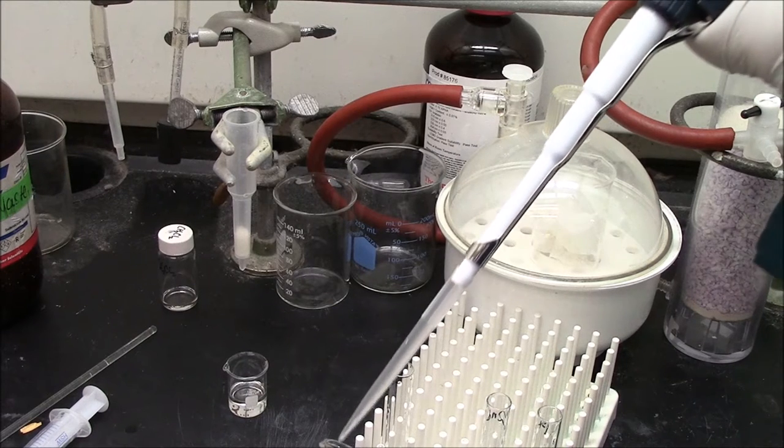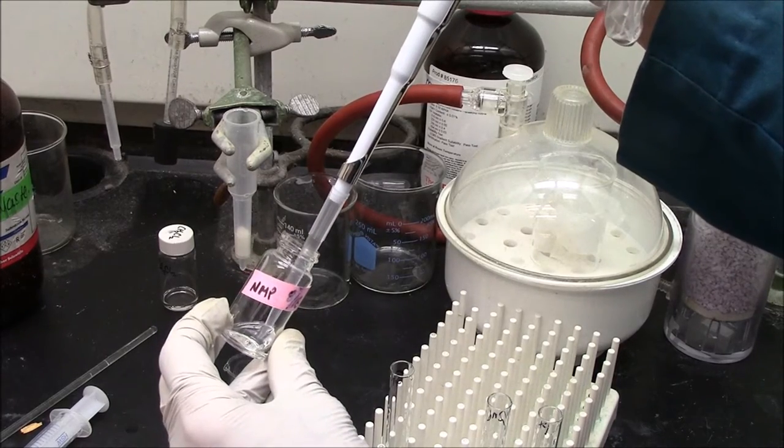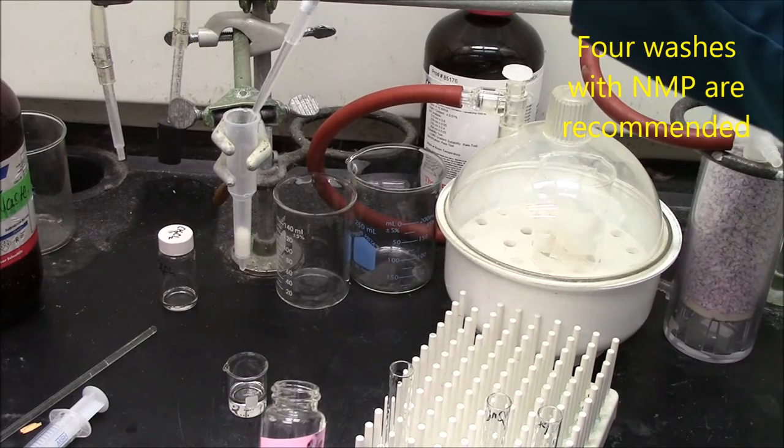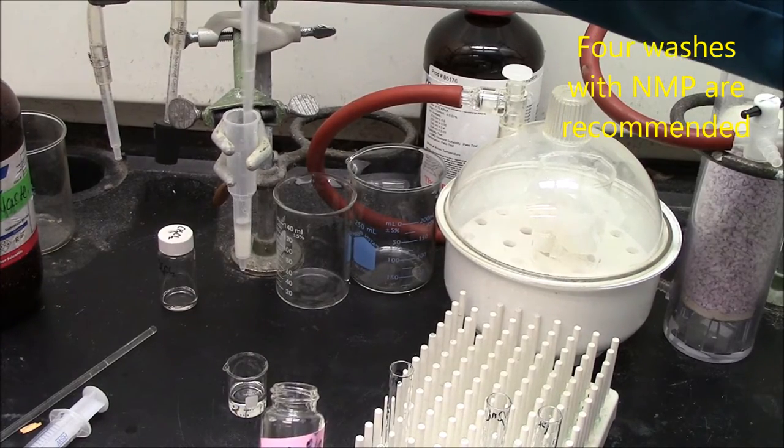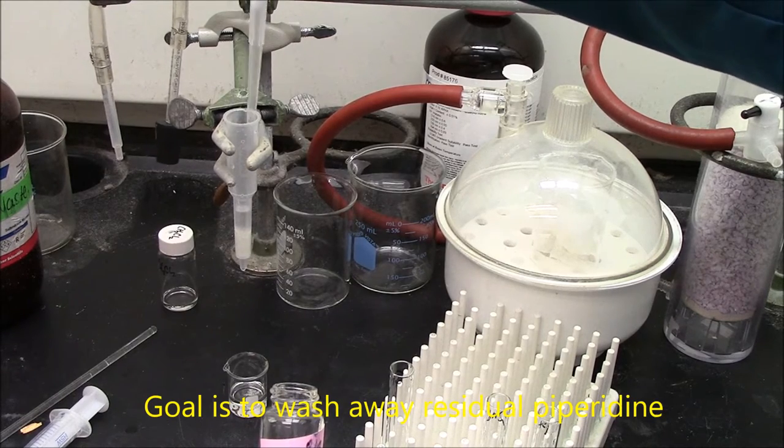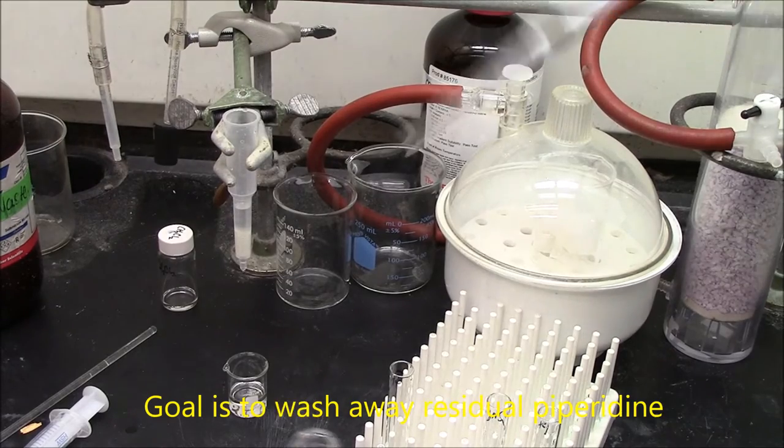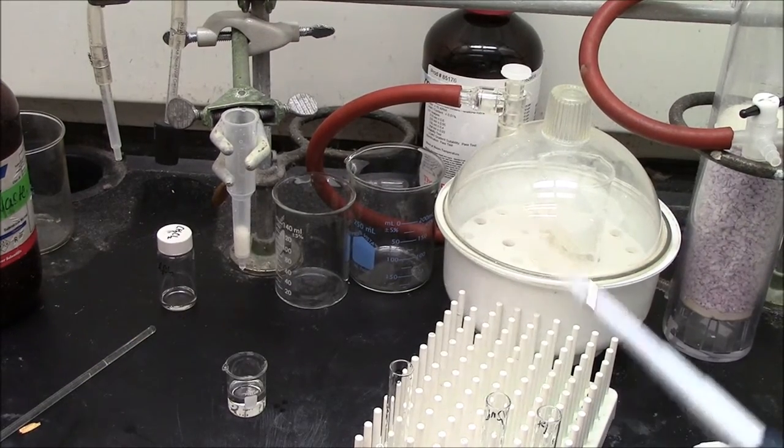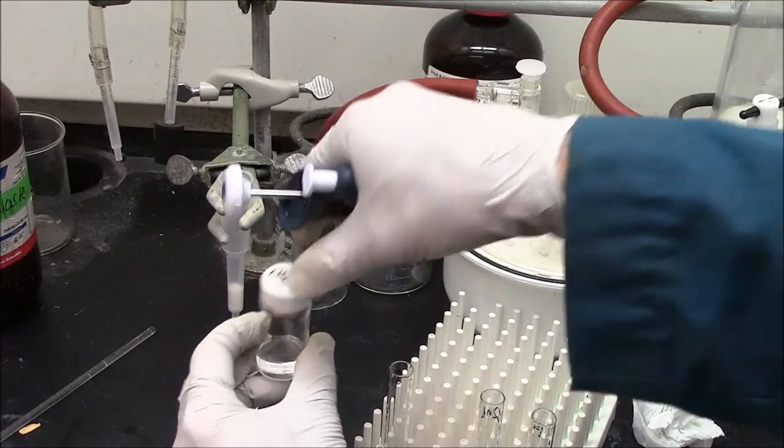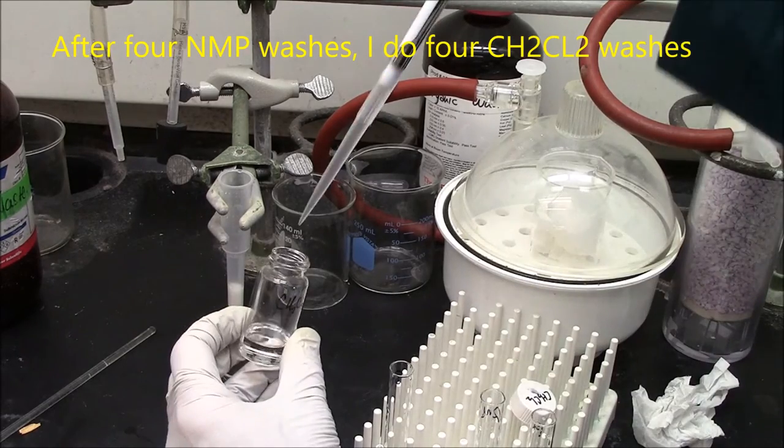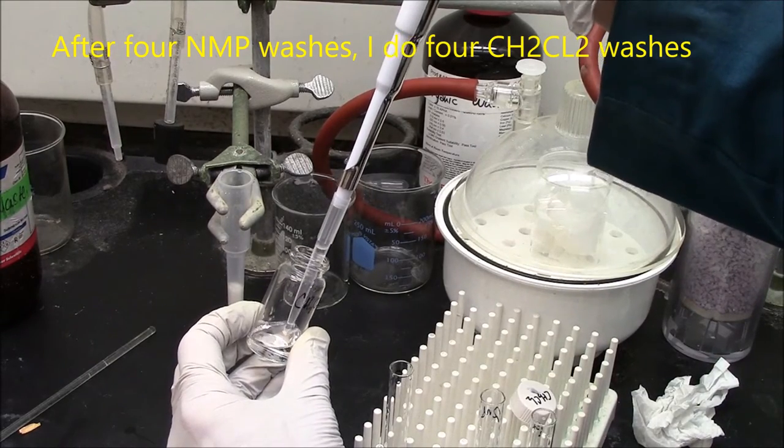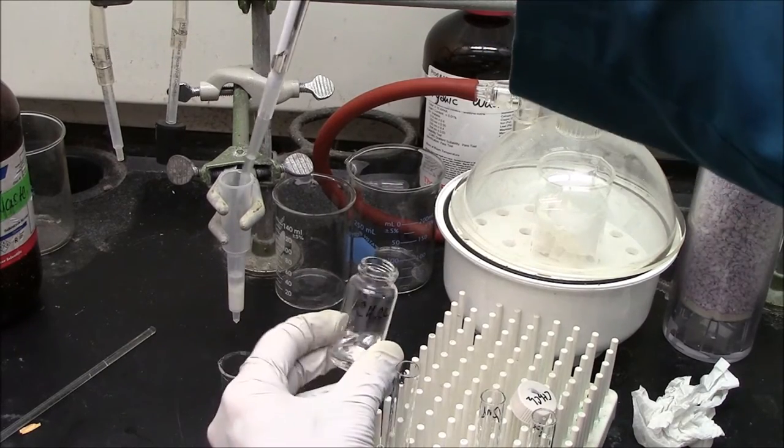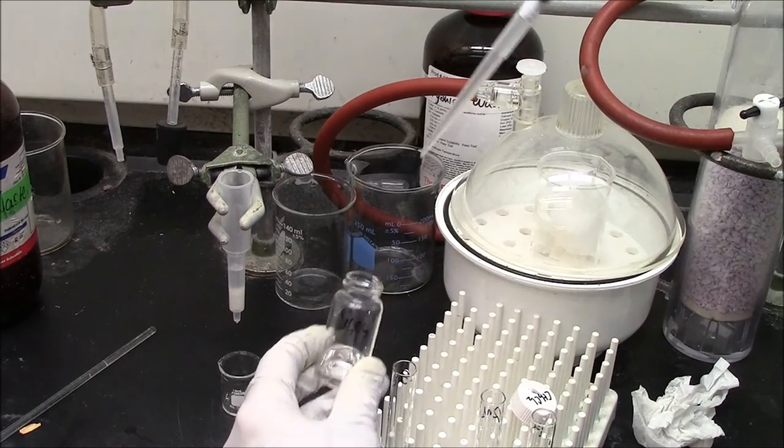In solid phase synthesis, it's very important to wash the beads after important steps. This gets rid of unwanted reactants. I'm now washing the column with NMP. I'll do this three times with one milliliter each. I am trying to wash the sides of the walls as well as the beads themselves. I'm trying to get rid of all traces of piperidine. Now I'll wash with dichloromethane, CH2Cl2. Again, my goal is to get rid of any traces of previous reactants. Dichloromethane is much runnier, much less viscous.